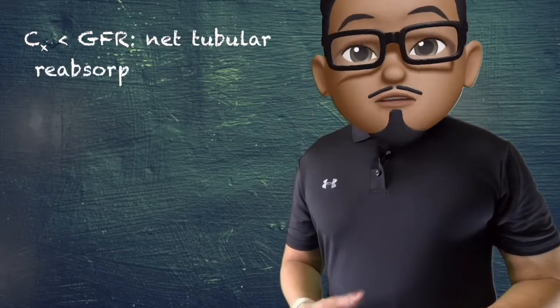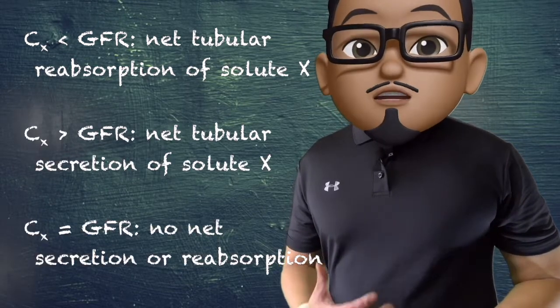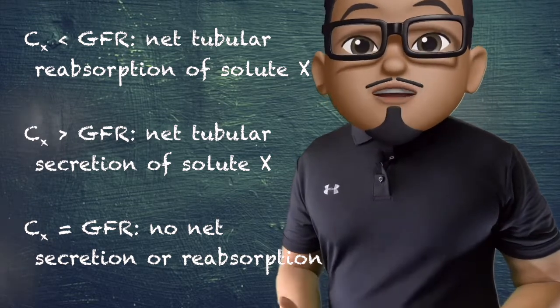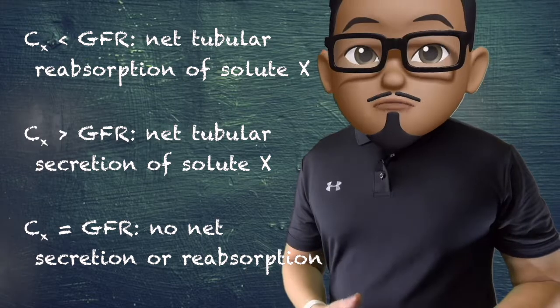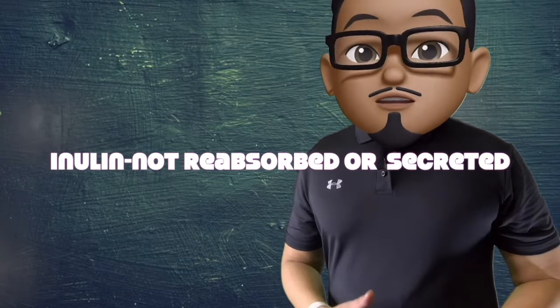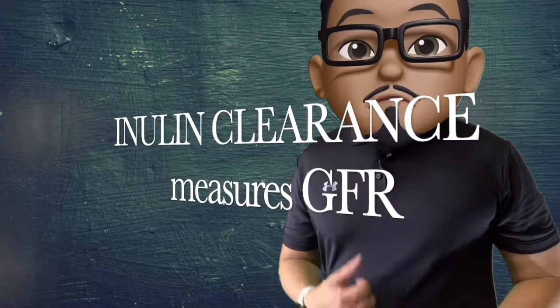The relationship of clearance with GFR is shown in this slide. If your clearance is less than GFR, there is net tubular reabsorption of your solute. If your clearance is more than GFR, there is net tubular secretion of the solute. If your clearance is the same as GFR, there is no net secretion or reabsorption. Inulin can be used to calculate GFR because it is freely filtered and is neither reabsorbed nor secreted — the clearance of inulin measures GFR.